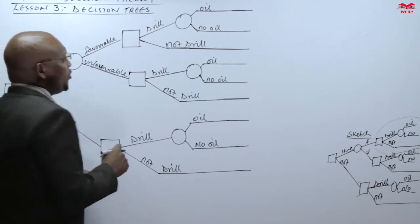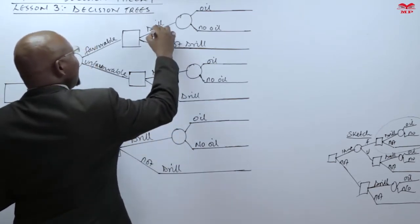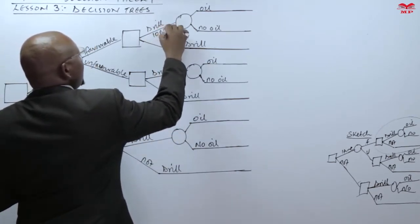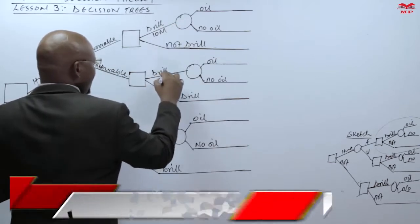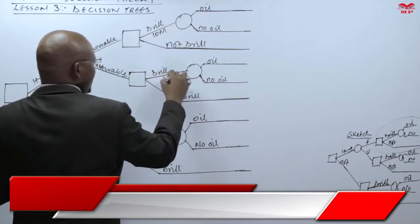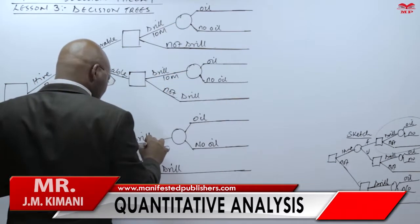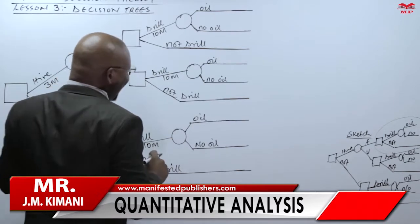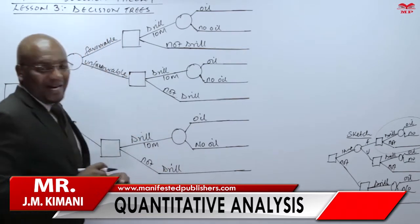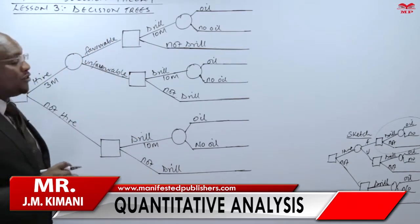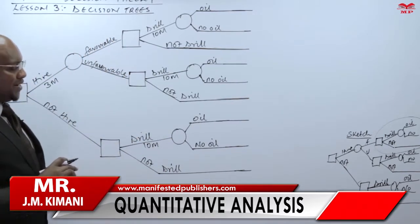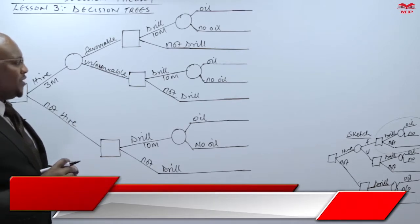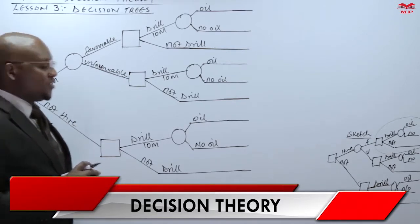For example, if you drill you are told you are going to incur 10 million, so here we have 10 million. Here we also have 10 million for drilling, and here we have 10 million — so in all cases where we are drilling we incur 10 million. If you're not drilling, there is no cost to spend, and that's all about the decision.